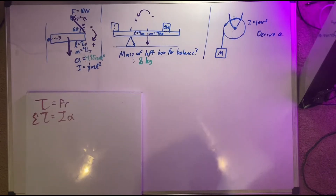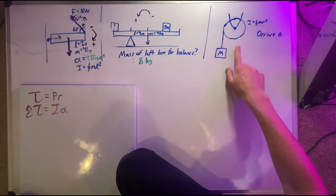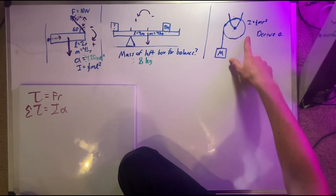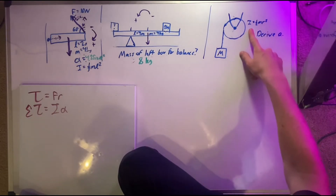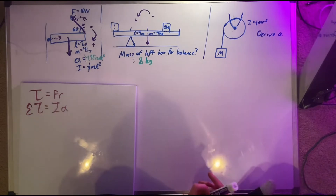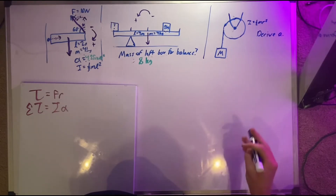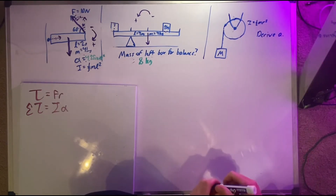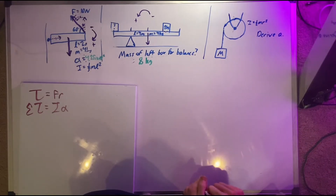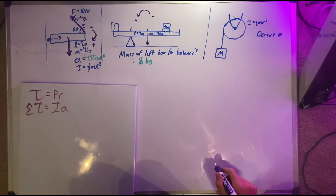Now the third problem. It's asking us to derive the linear acceleration of the entire system with a non-ideal pulley. This pulley has no friction — because it doesn't tell you there's friction — but it does have a mass, which makes it a little more involved than normal. In order to solve for linear acceleration, we need to sum both the forces and the torques on the entire system, then plug things back in and solve for the final equation.